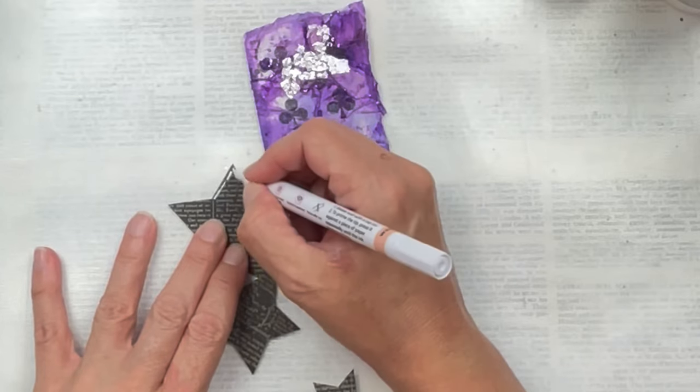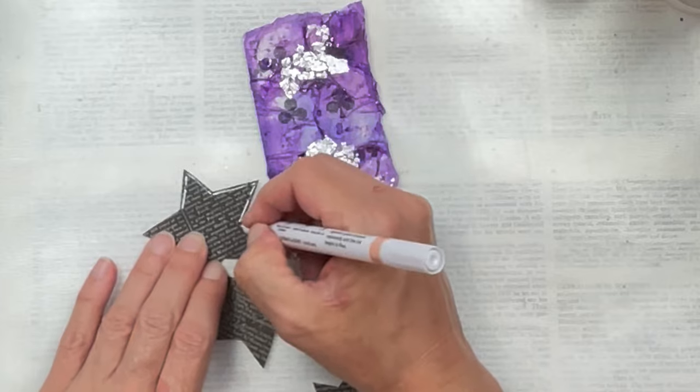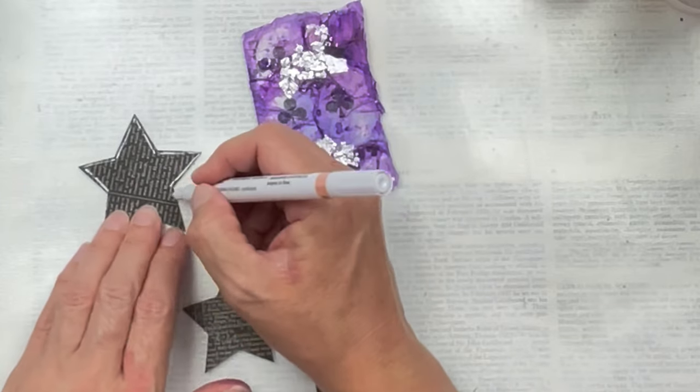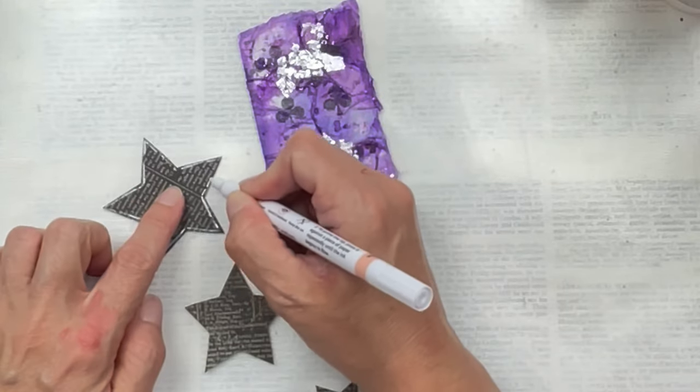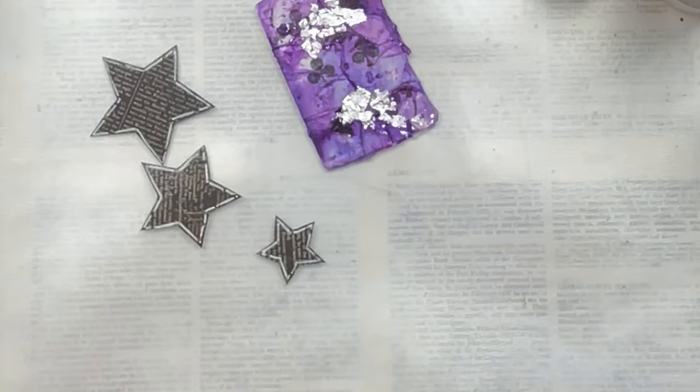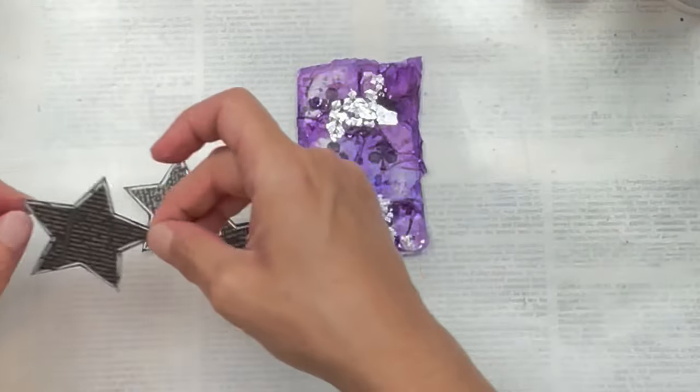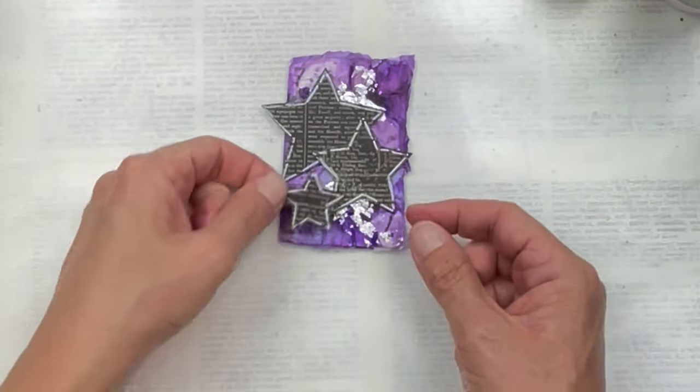To lighten the stars a bit so they stand more in the foreground, I'm going to do some kind of shadowing or a border with a white acrylic marker just around the edge of the stars. Now I'm going to start placing them onto my card just to see their placement and how I'm going to do this.